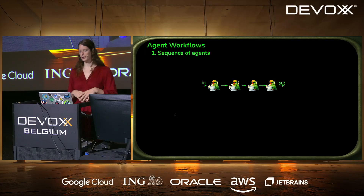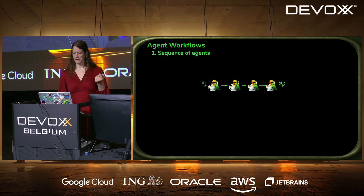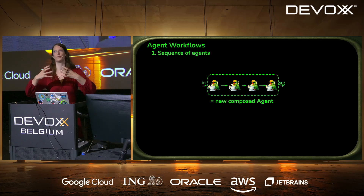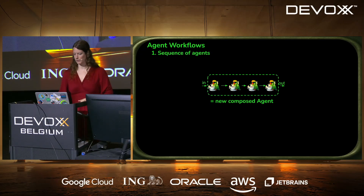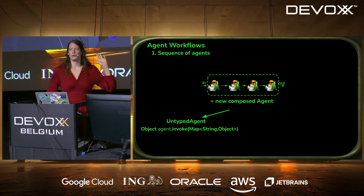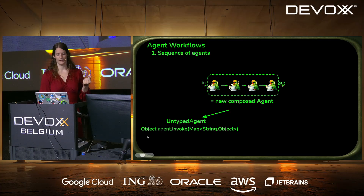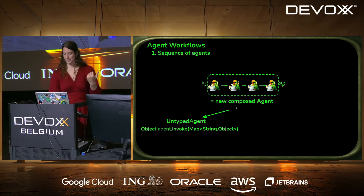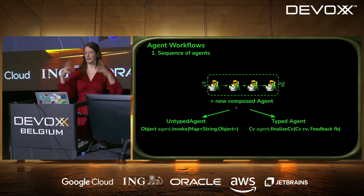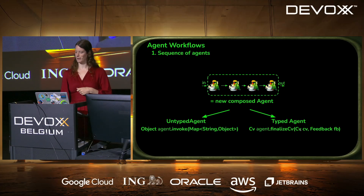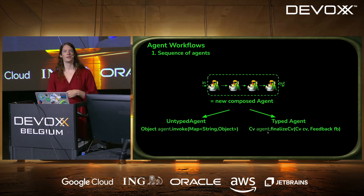The whole point of agents is to use them together. With a sequence of agents, you can compose multiple agents called in a row, and the composition itself is also just an agent so it can be reused in other parts of a workflow. You can go untyped — using a general invoke method on a map of input objects — or you can be more careful and define a typed sequence agent, specifying exact input and output types, building beautiful Java code with objects in and objects out.